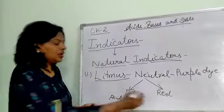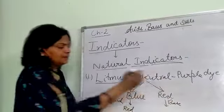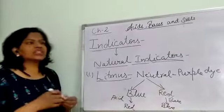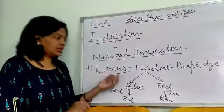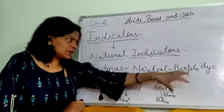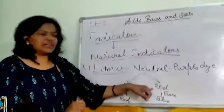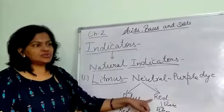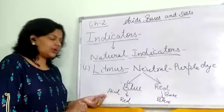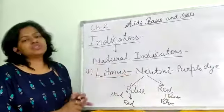If we have red litmus solution or red litmus paper and add some base, the color will change to blue. The purple color is used to make blue litmus and red litmus. When we add acid, the litmus changes to red; when we add base, it changes to blue.